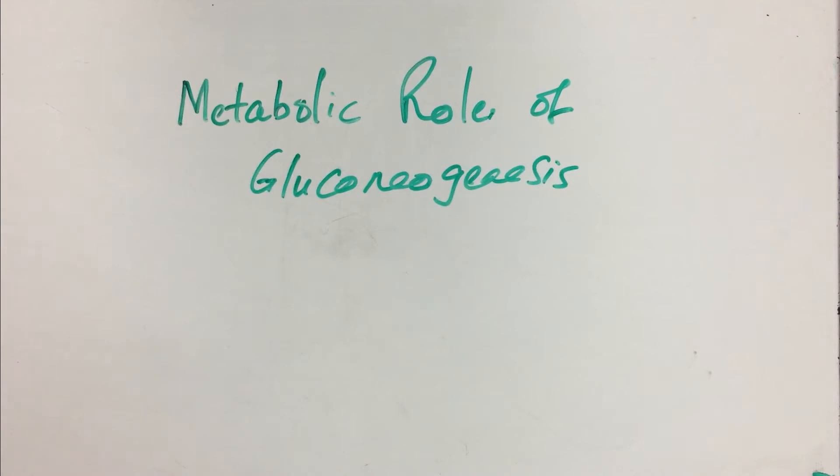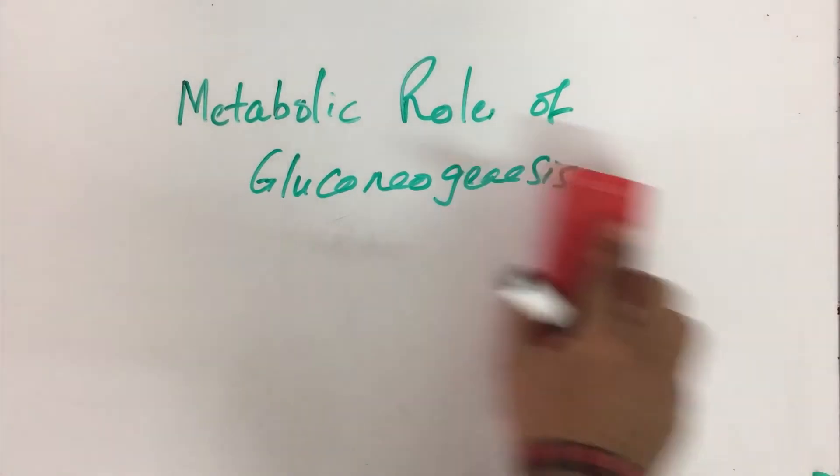So far, we have looked at what is gluconeogenesis and the rationale for gluconeogenesis. We have also seen the location where gluconeogenesis will occur, and also the requirements or the precursor molecules, and how do we make these molecules available at the location where gluconeogenesis will take place.